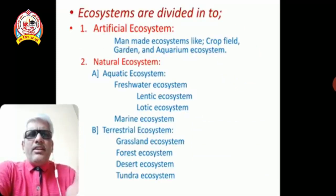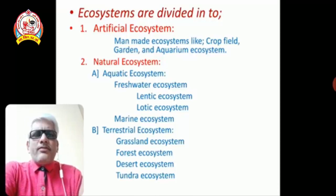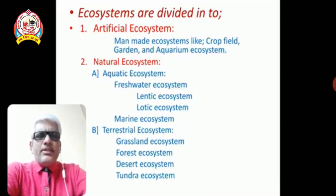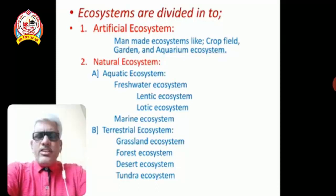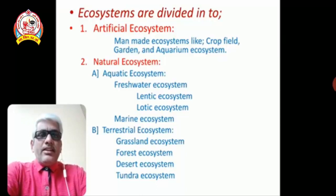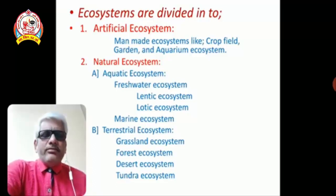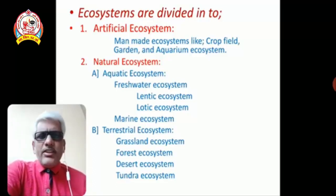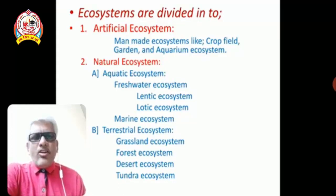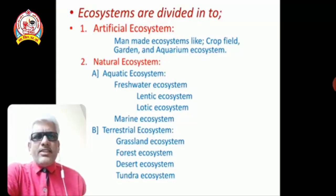Ecosystems are also divided into two types: artificial ecosystems and natural ecosystems. The artificial ecosystem, as the name suggests, is man-made — like crop fields, gardens, and aquariums. Natural ecosystems, on the other hand, are naturally constructed. They are perennial, longer-lasting, self-sustaining, and self-regulating ecosystems.